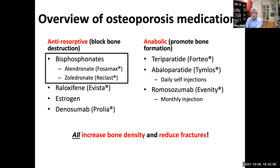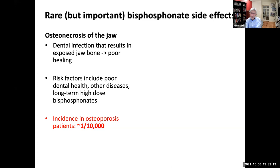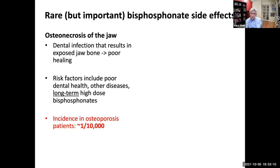Bisphosphonates are the most commonly used medications, so we'll get into more detail about some of the risks associated with bisphosphonate therapy. The oral bisphosphonates can be associated with irritation of the esophagus and GI symptoms — this happens in about 10% of people who take these medications. I think of this as a common but not necessarily serious side effect; those symptoms typically go away once the medication is stopped. In contrast, there are two other side effects that are much more serious: osteonecrosis of the jaw and atypical fractures of the femur.